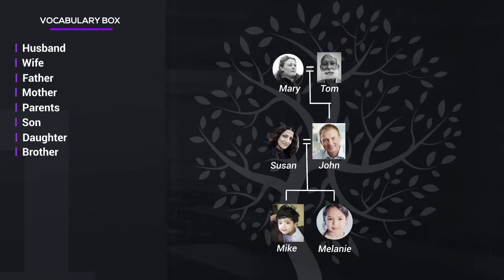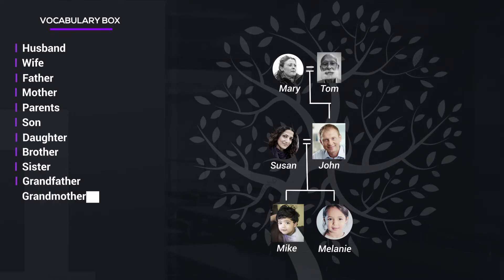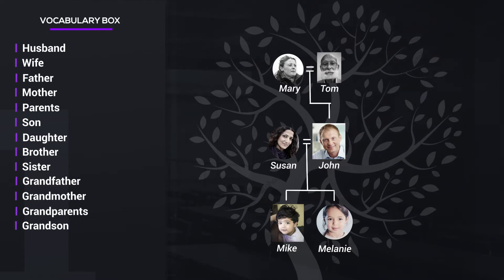Mike is Melanie's brother. Melanie is Mike's sister. Tom is Melanie and Mike's grandfather. Mary is Melanie and Mike's grandmother. Tom and Mary are Melanie and Mike's grandparents. Mike is Tom and Mary's grandson. Melanie is Tom and Mary's granddaughter.